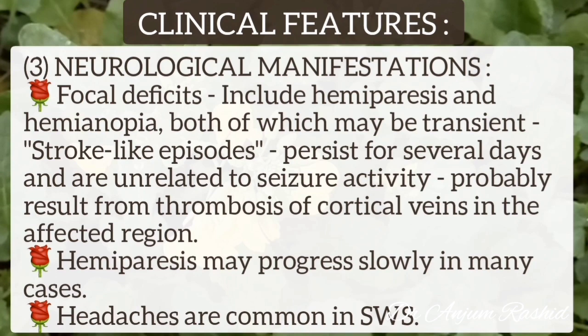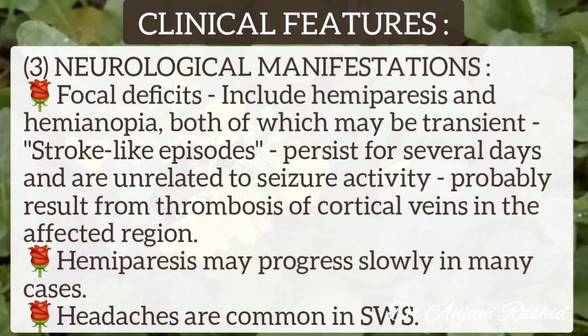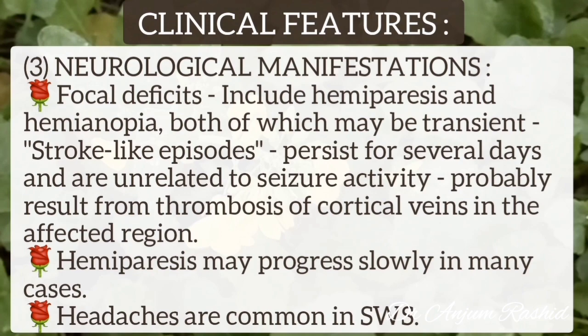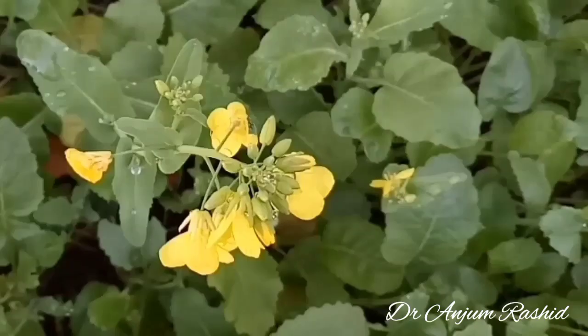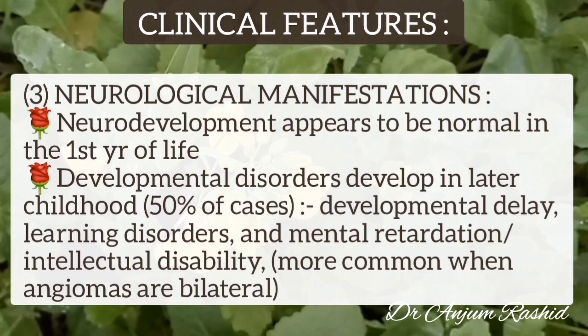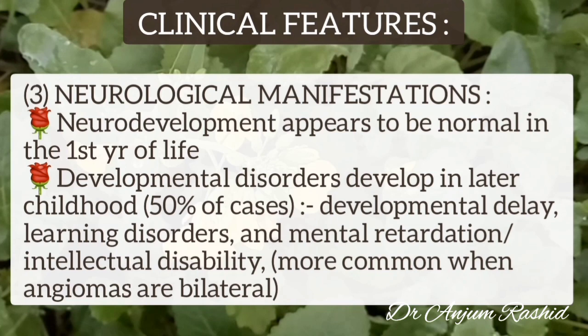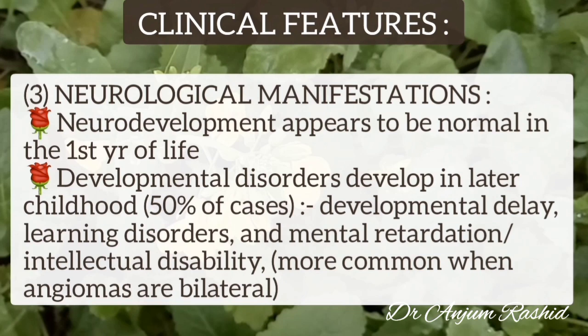These stroke-like episodes may persist for several days and are unrelated to seizure activity. They result from thrombosis of the cortical veins in the affected region. Hemiparesis may progress slowly in many cases. Migraine-like headaches are also common. Neurodevelopment appears to be normal in the first year of life; however, developmental disorders develop in later childhood in 50 percent of cases, including developmental delay, learning disorders, and intellectual disabilities. These developmental disorders are more common when angiomas are bilateral.